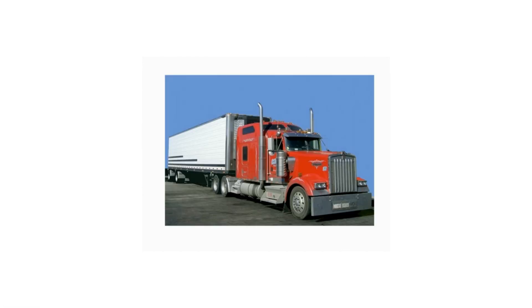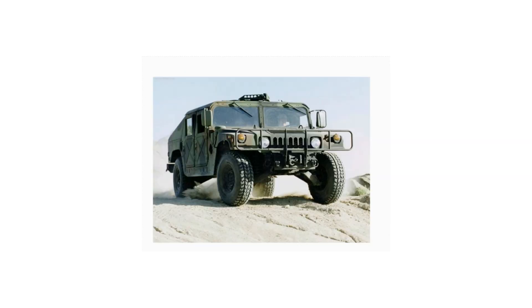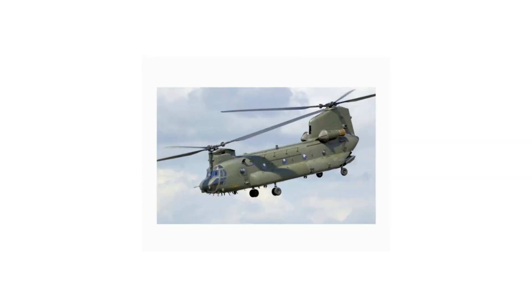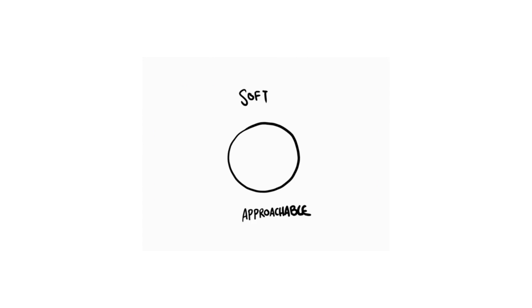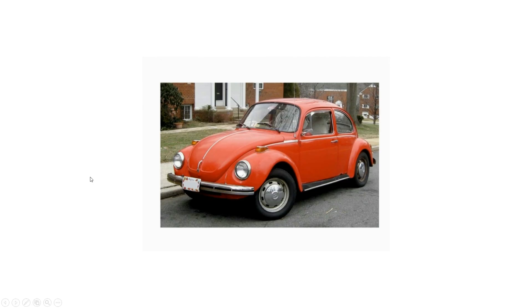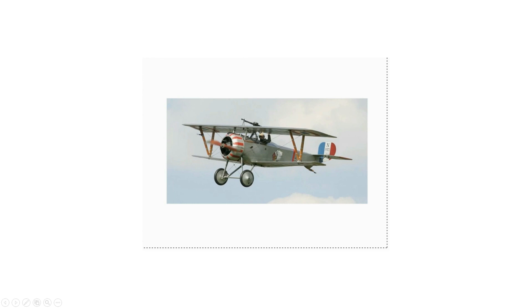We're omnivores. This truck is obviously associated with stability. Now, circles are soft and approachable. This first car is specifically designed to be marketed to women — notice it's got all these appealing circles everywhere. This is what a warplane used to look like; it doesn't look very threatening, partly because of the way it's designed.